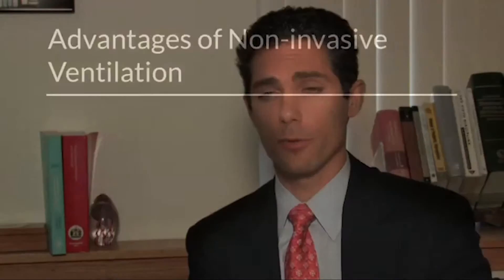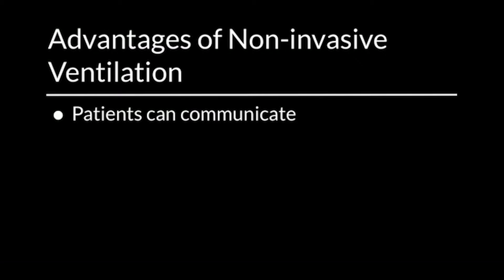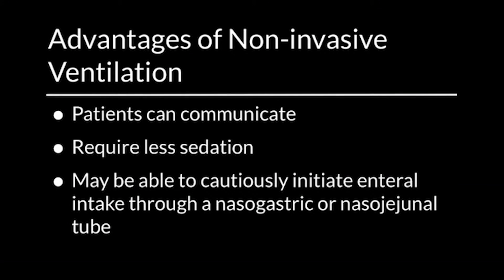What are some of the advantages over placing an endotracheal tube or a tracheostomy in the short term? Patients who are able to can communicate — they can speak through a mask and help direct their care, and inform you whether they are getting better or worse. They can usually get away with less sedation, though sometimes low-dose sedation helps them get accustomed to it. They may also be able to continue oral intake, or at least enteral intake through a nasogastric or nasal jejunal tube.